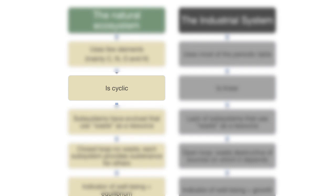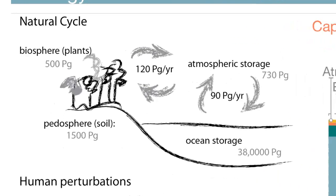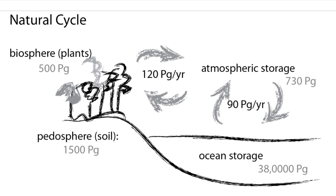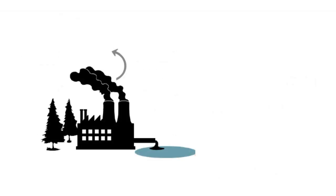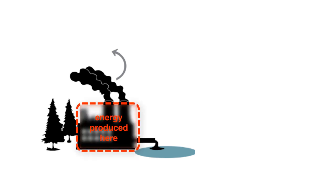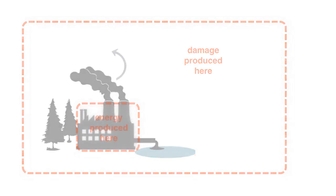Nature's designs are cyclic. This means that, as in the example of the carbon cycle, materials are used and reused in a balanced cycle. In contrast, human systems are linear, meaning they are designed to achieve a one-way goal, such as extracting energy. They do not account for the unintended consequences of achieving this goal, which is the accumulation of byproducts in another part of the system.